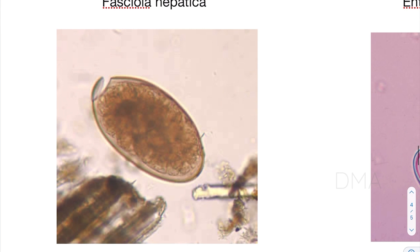Let's take a look at the Fasciola hepatica egg. In this case, you can definitely notice the operculum at one end, and the egg is ellipsoidal in shape. With these features, you can identify the Fasciola hepatica egg.